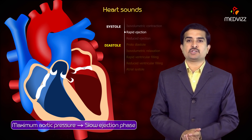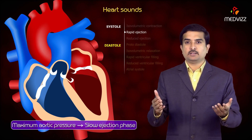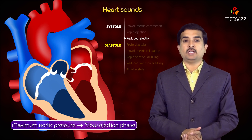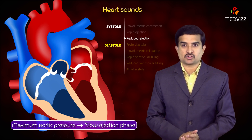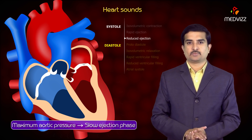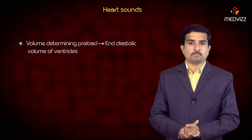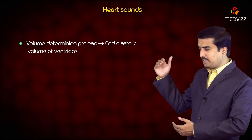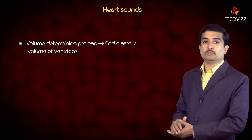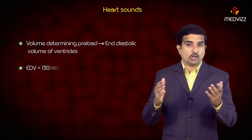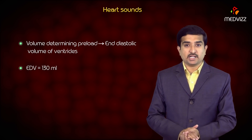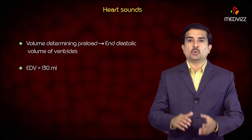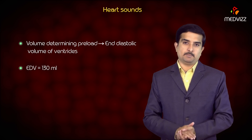Maximum aortic pressure is seen in the slow ejection phase, not in the rapid ejection phase. The volume determining preload is called the end-diastolic volume of the ventricles. The volume determining preload, that is EDV, is equal to 130 ml.